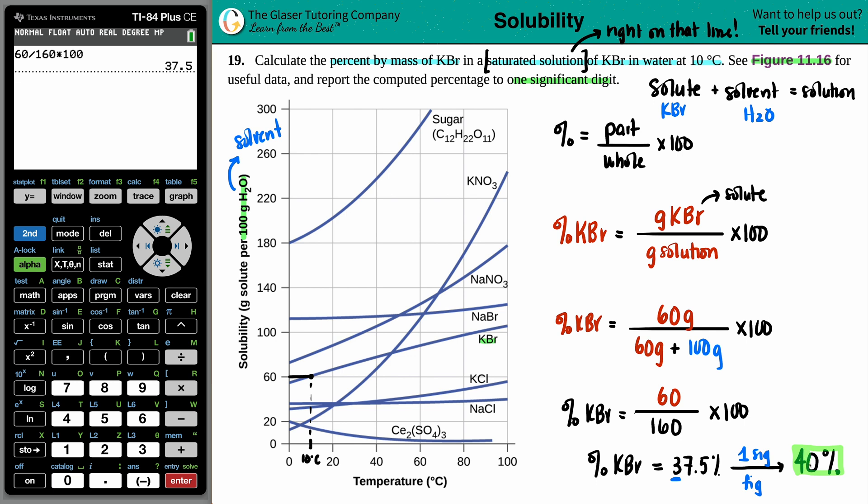And that's it. I hope this helps. 40% roughly is the percent by mass. So that means that in this solution, 40% is the solute, KBr. The 60% is going to be the solvent, the H2O. And that is it. I hope this helps. Let me know in the comments.